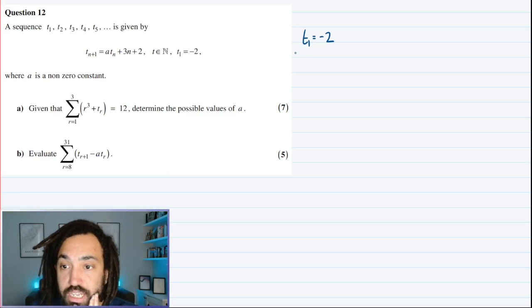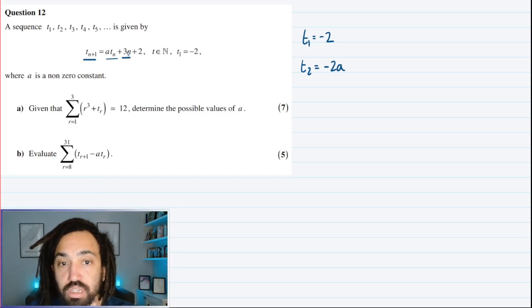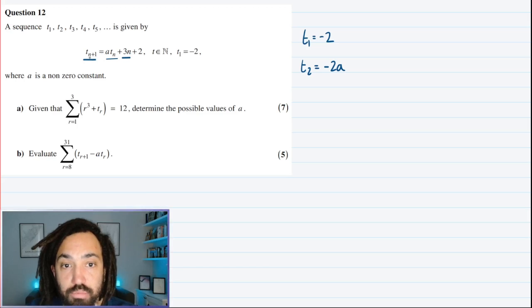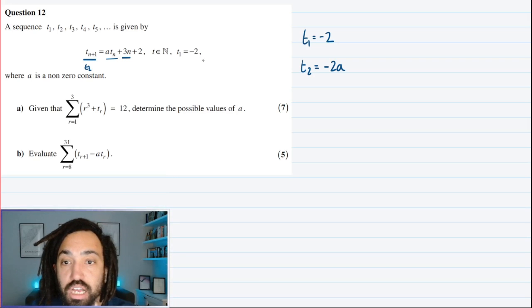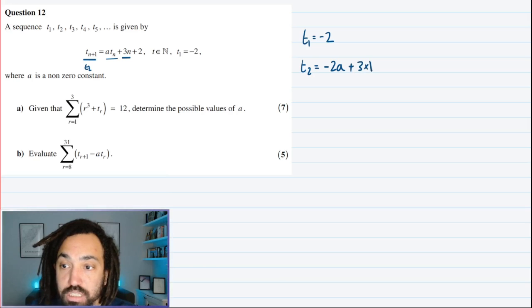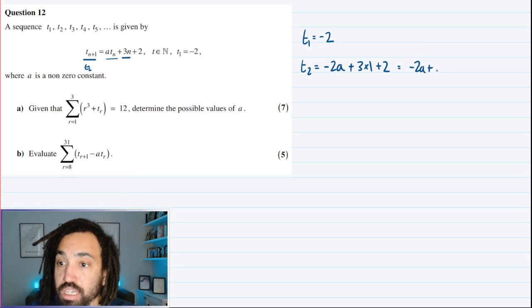So we've got t1 here, so let's find t2. So I'm going to substitute into this formula, because this gives me the next term in the sequence. It tells me I need to times the last term in the sequence by a, so that would be minus 2 times by a. And then I've got to do 3 times n. Well, in this case, I'm looking for t2, so therefore n is 1. So I need to add on 3 times by 1, and then add on 2. So this gives me minus 2a plus 5.